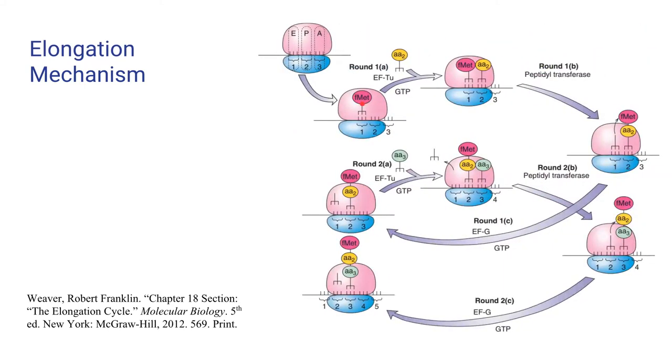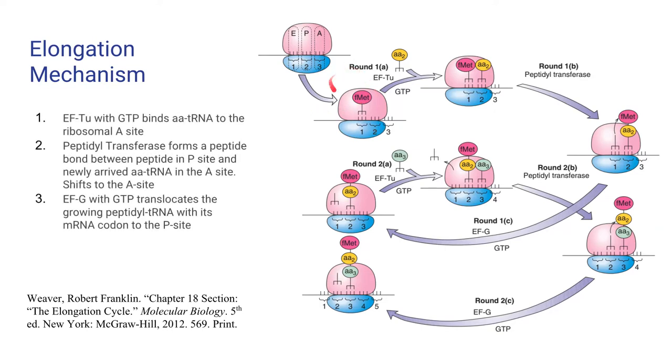Here's a general overview of the elongation mechanism. I understand that it's a bit overwhelming, so let's just take it step by step. First, we start with fMet-tRNA binding to the ribosome at the P site to initiate translation. Then, the first step of elongation occurs.